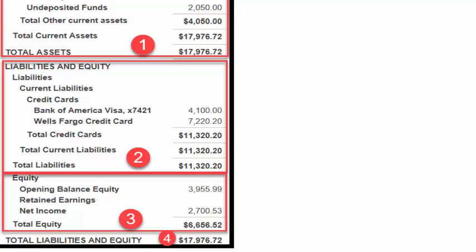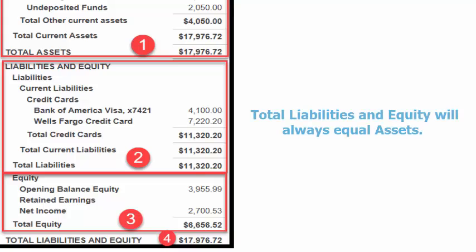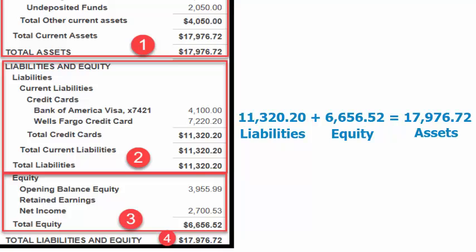Section 4, Total Liabilities and Equity. This is the total of sections 2 and 3. From an accounting perspective, total liabilities and equity will always equal assets. This holds true for Paul's Balance Sheet Report. Total assets here in section 1 is $17,976.72 and the total amount of liabilities plus equity equals $17,976.72 here in item number 4.